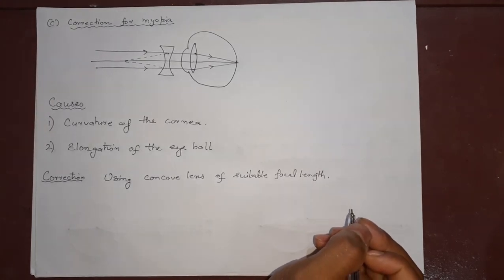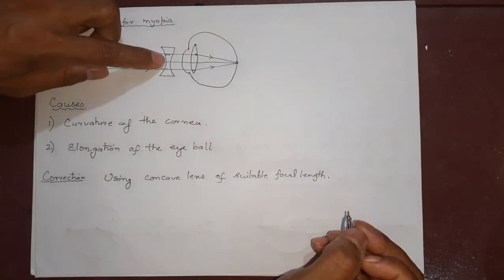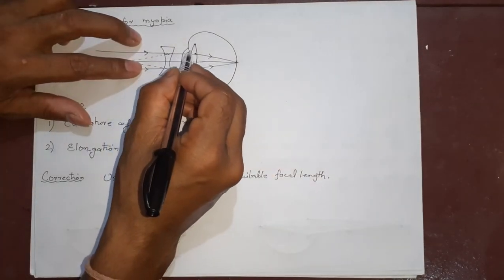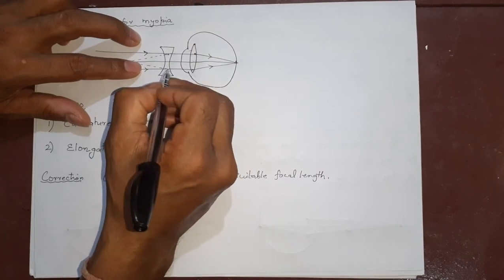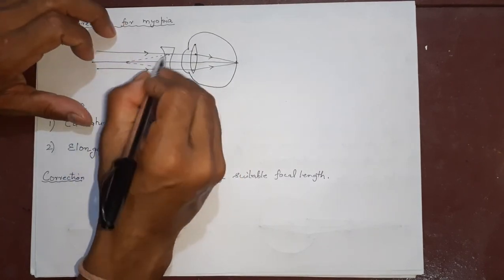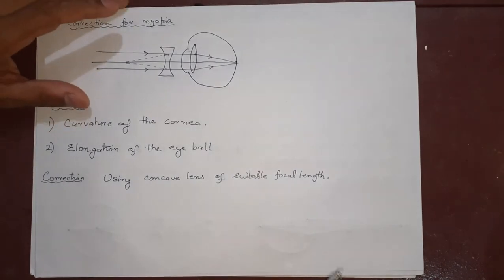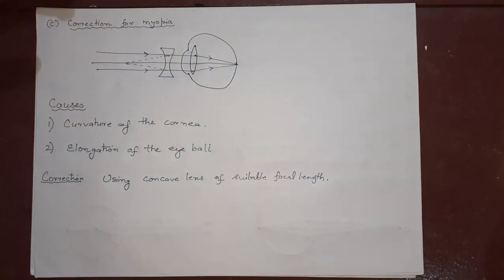This is how the correction is made. What the concave lens does is it diverges the light — it diverges the parallel light coming in, and then the eye lens will easily focus it on the retina. So this is all for the first defect. We will continue with the second one in the next part.